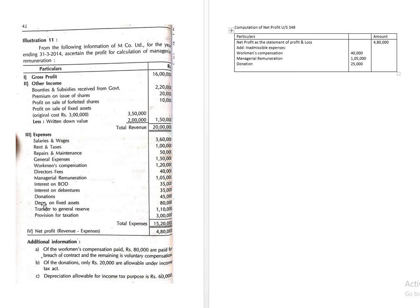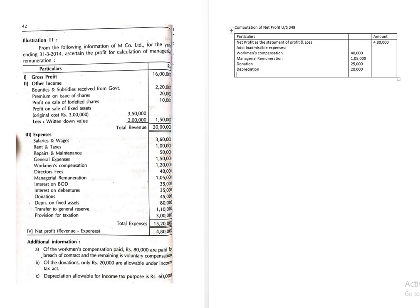Depreciation on fixed assets is operative in nature. However, if there is any excess depreciation over the amount allowed under IT rules, that excess amount is treated as disallowable. Depreciation on fixed assets in the books is 80 thousand, while as per the adjustment it is 60 thousand. The difference — excess depreciation of rupees 20 thousand — is considered a disallowable expense.